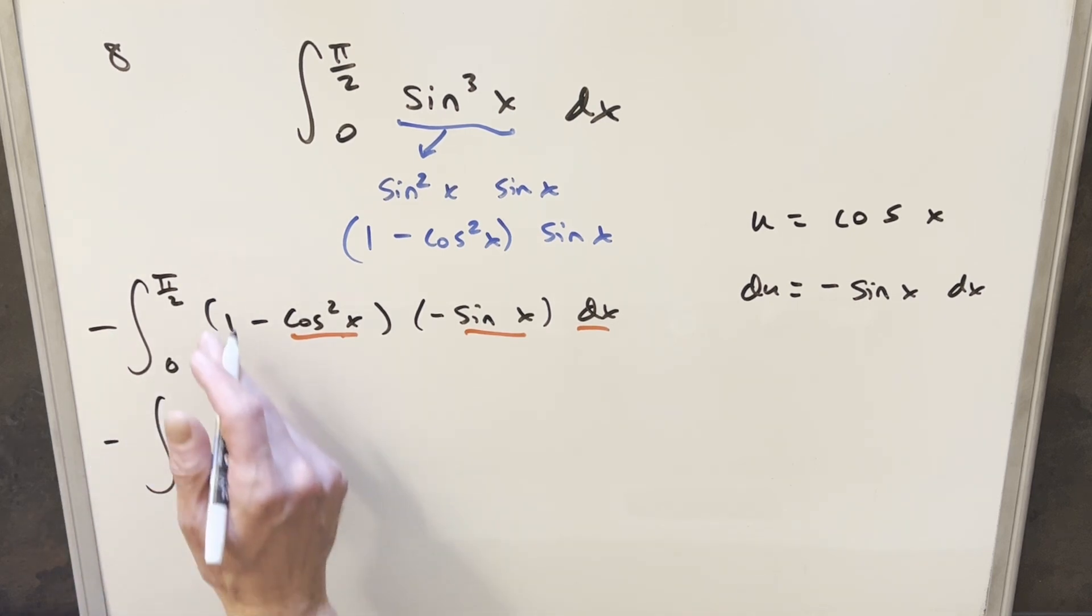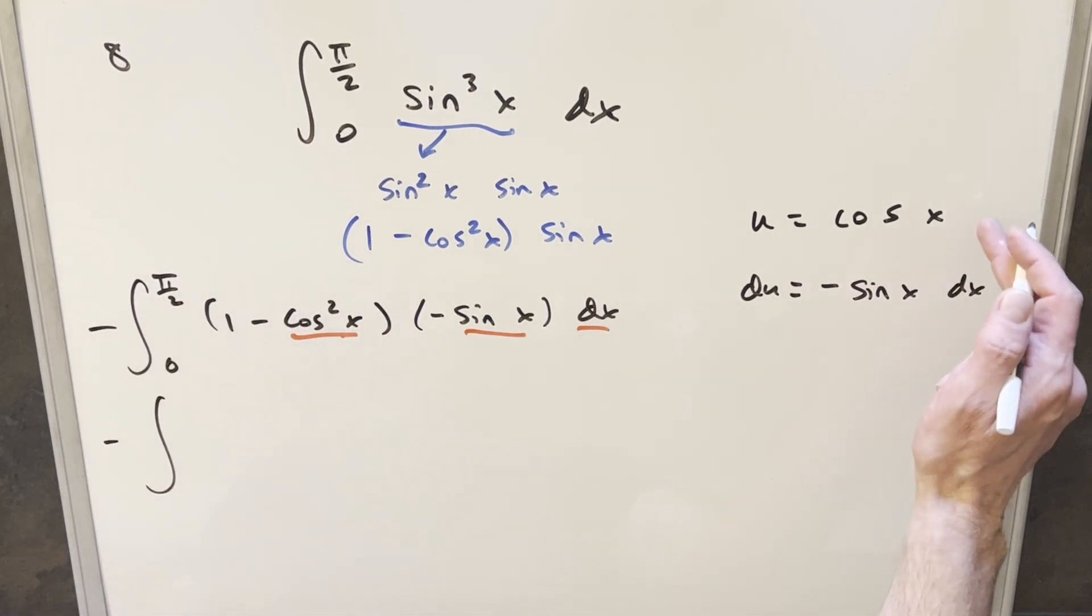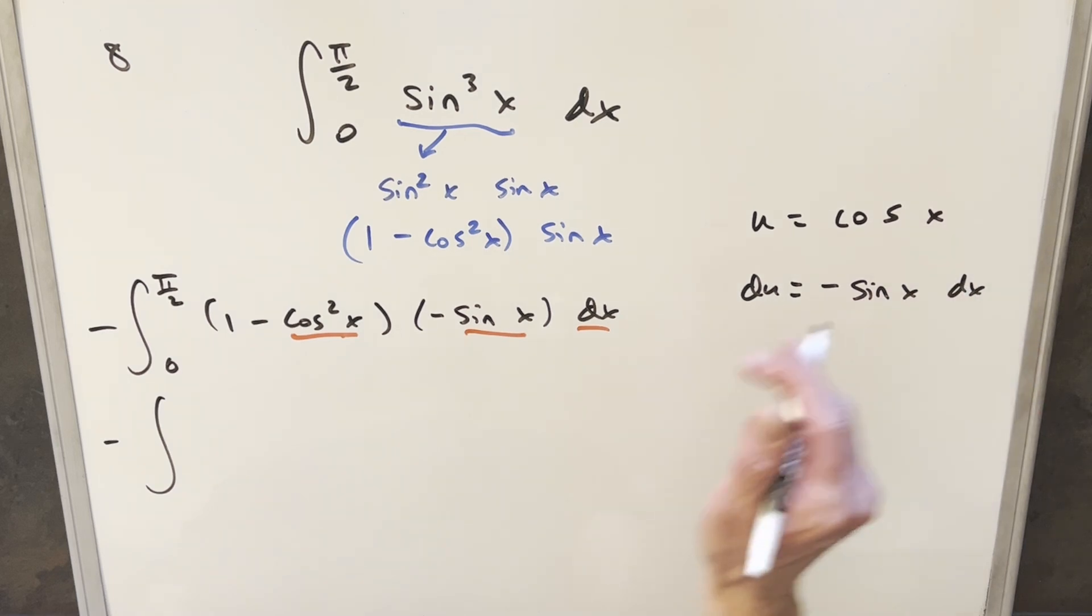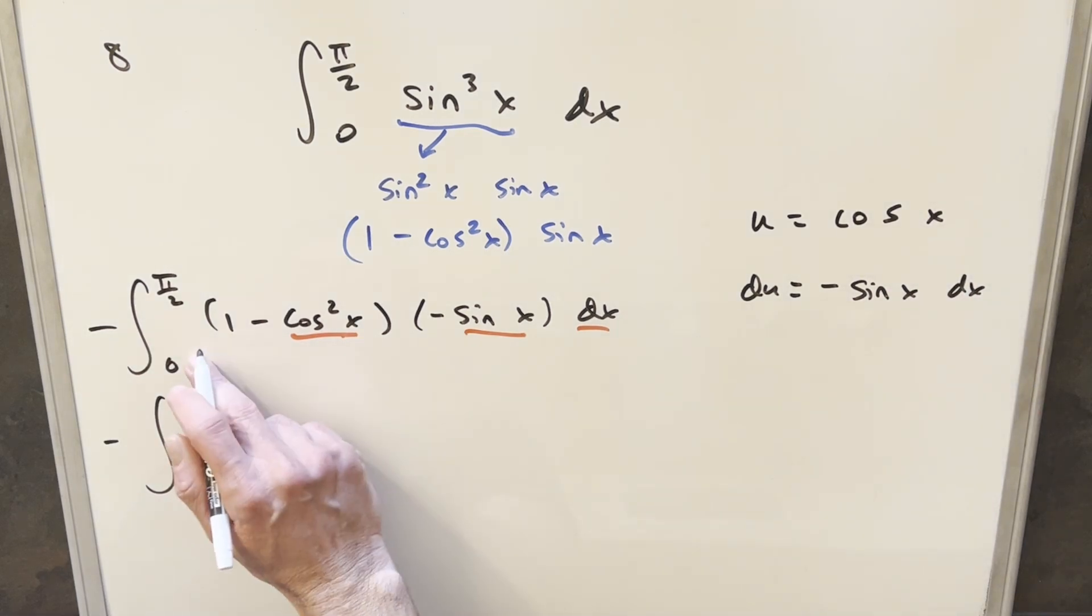Now we'll go ahead with our substitution. First I'll take π/2 and plug it in. Cos(π/2) is 0. Plugging in 0, cos(0) is 1.